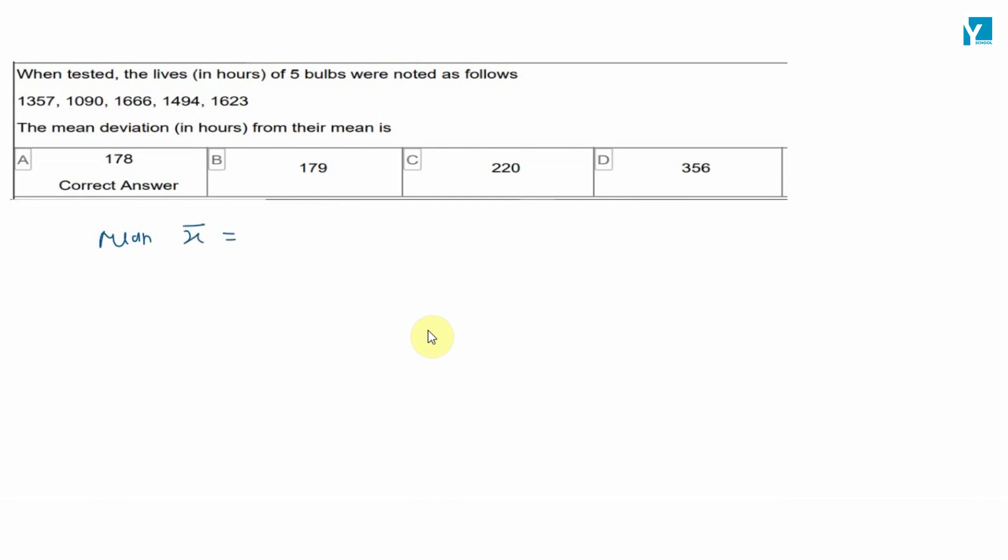Mean is sum divided by number of observations. 1357 plus 1090 plus 1666 plus 1494 plus 1623 divided by 5. This equals 7230 divided by 5, that is equal to 1446. This is the mean.